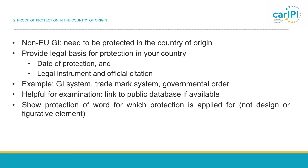The second heading in the summary specification is the proof of protection in the country of origin. Non-EU GIs always have to already be protected in the country of origin. The application has to provide information on the legal basis for protection in the respective country, indicating both the date of protection and the legal instrument and official citation. The GI does not necessarily have to be protected under the GI system of your country — because some countries have not yet implemented a GI system — it could also be a trademark system or a governmental order. Some countries have a public database of protected GIs, and if yours does, providing a link could be helpful for the Commission's assessment.